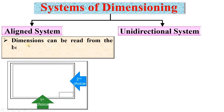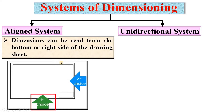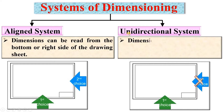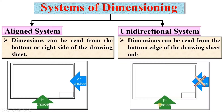In the aligned system, dimensions can be read from the bottom or the right side of the drawing sheet. In the unidirectional system, dimensions can be read from the bottom edge of the drawing sheet only. This is the main difference between the aligned system and the unidirectional system.